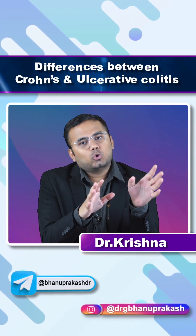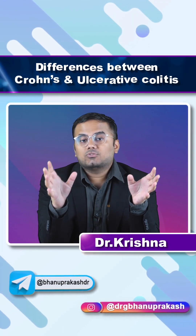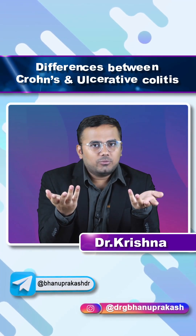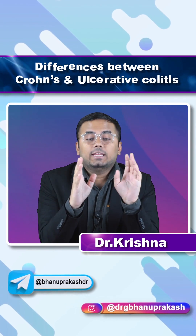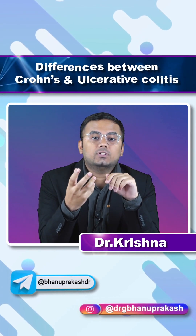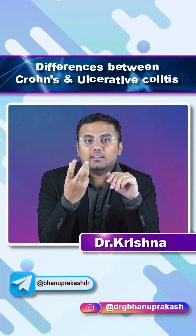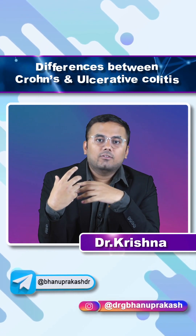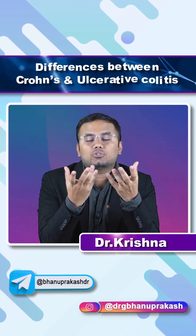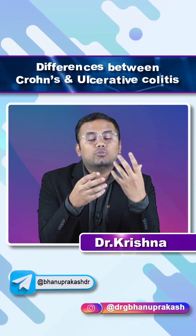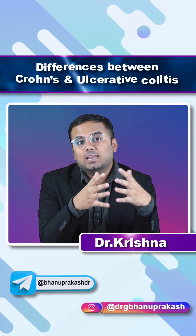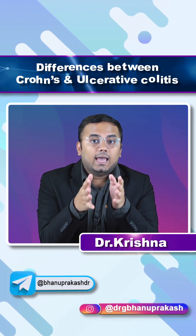The differences between Crohn's disease and ulcerative colitis: both of them are autoimmune conditions. In Crohn's disease you will see a lesion in the right iliac fossa, whereas in ulcerative colitis you will see abdominal pain or the lesion in the left lower quadrant.